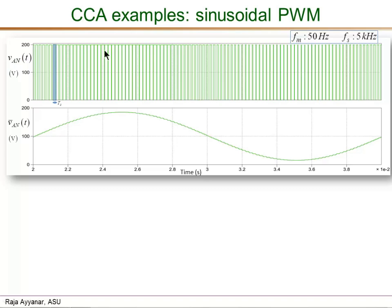Here is an example: just by looking at a switching waveform we cannot tell whether it corresponds to a DC-DC or DC-AC case. But if we take the cycle-by-cycle average using the definition introduced earlier, it comes out to be a waveform with a DC component and, more importantly, a large sinusoidal low-frequency component. The switching frequency here is five kilohertz — one switching period is shown in the shaded box — whereas the frequency of the sinusoidal fundamental component is 50 Hz. So the switching frequency is about 100 times greater than the fundamental frequency.